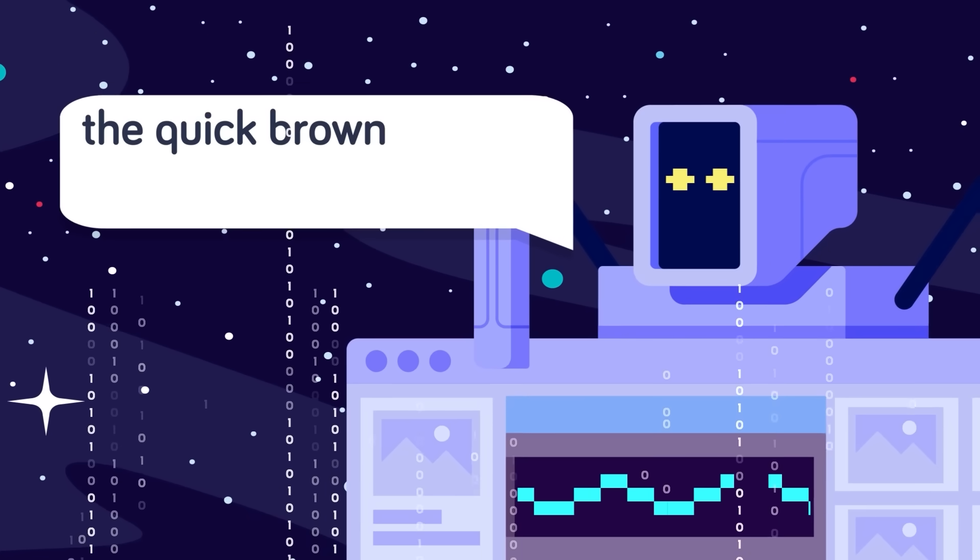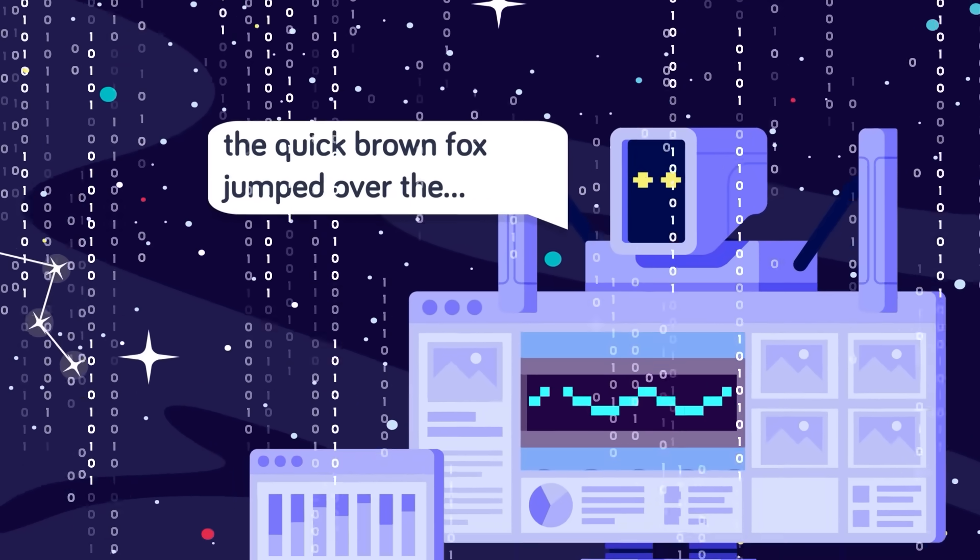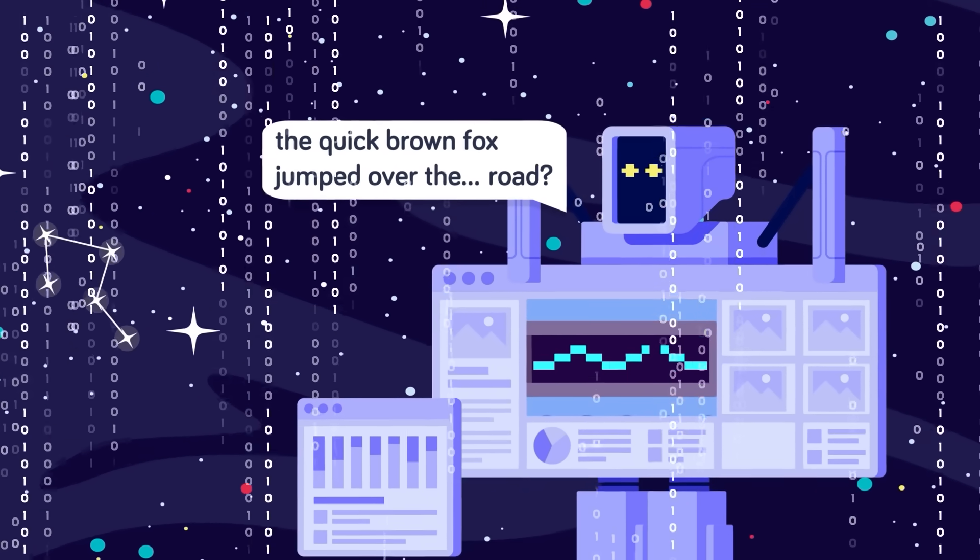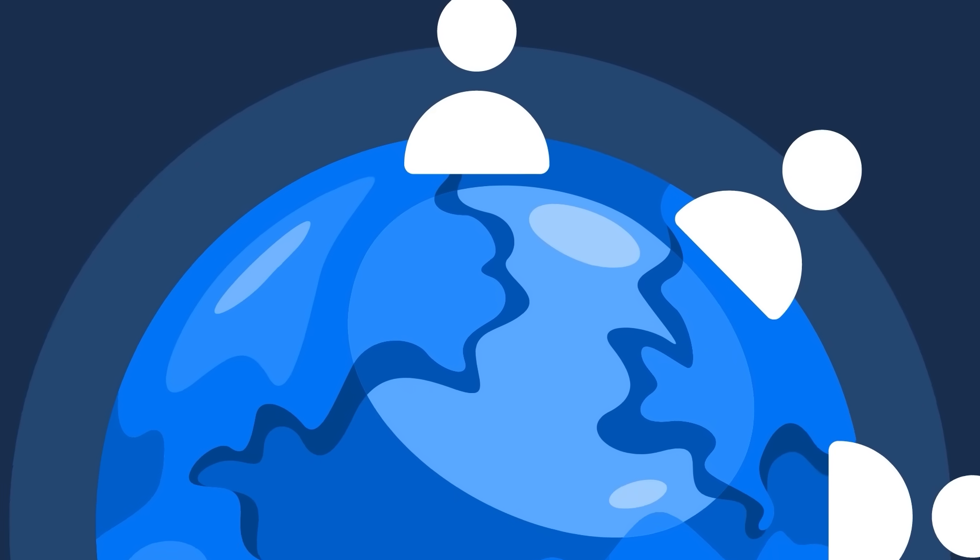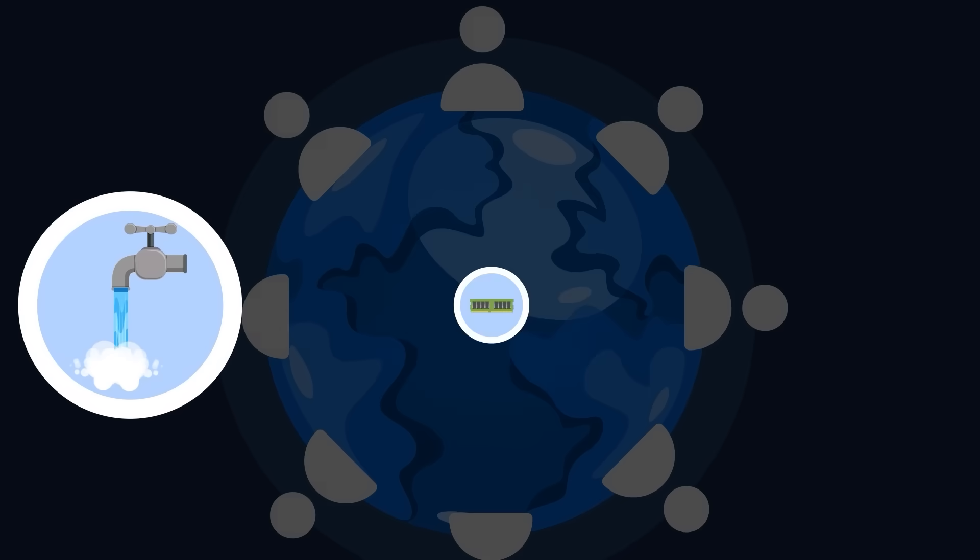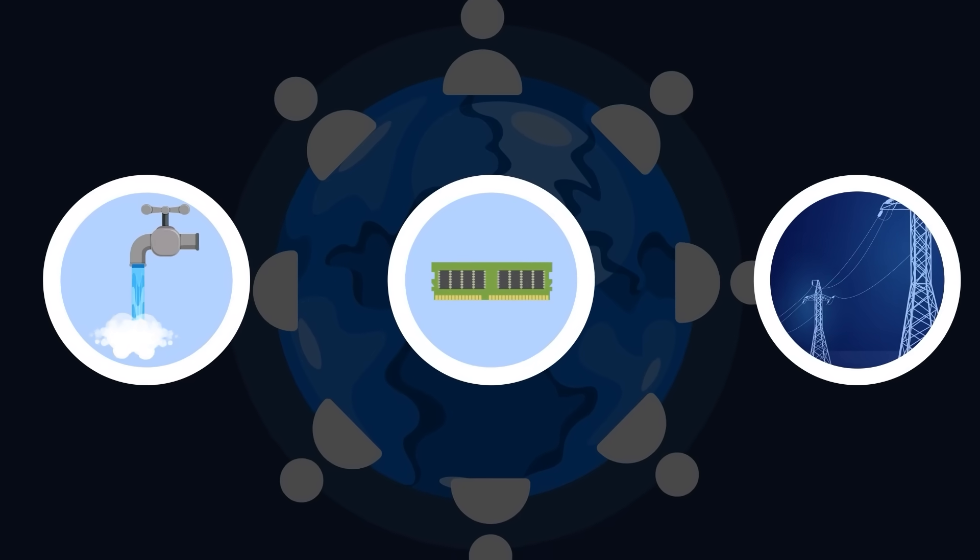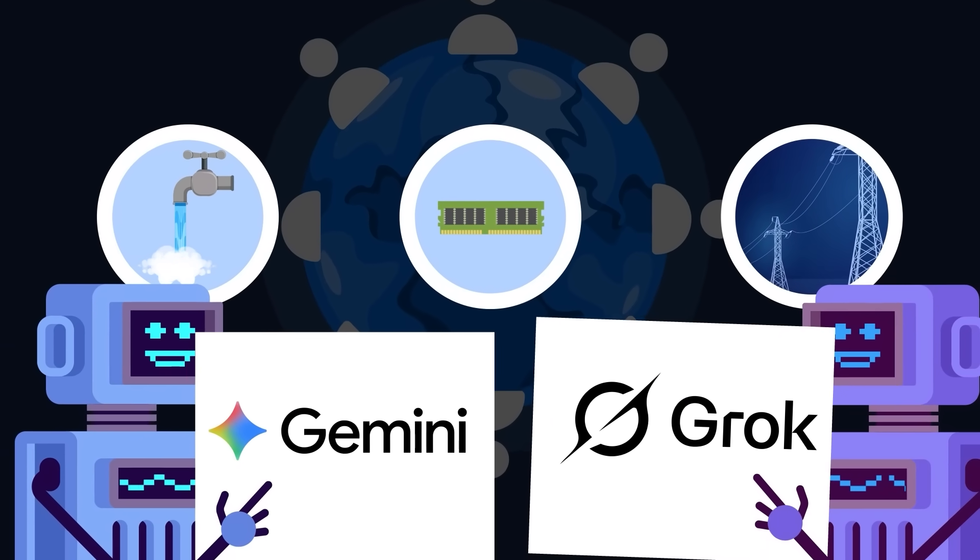ChatGPT is a predictive language model that uses incredibly powerful data centers to collate information from around the internet, filter it, and then predict what word should come next. And with millions of people using it every single day, that is a massive drain on every resource—water, electricity, and computer memory. Especially once rival chatbots Gemini, Grok, and more joined the party. And that RAM has to come from somewhere.